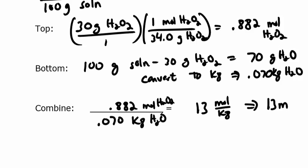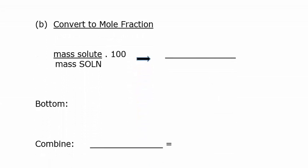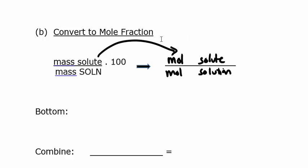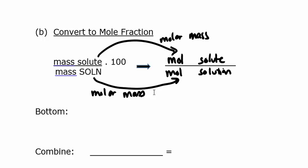Now let's convert the same starting units — 30% by mass — to mole fraction. Mole fraction is a ratio of moles: moles of solute over moles of solution. The only time the denominator is solvent is for molality; for mole fraction, it's the full solution. For the numerator, we use molar mass to convert grams to moles of solute — we already have that: 0.882 moles. For the denominator, we need moles of both solute and solvent separately using their respective molar masses.